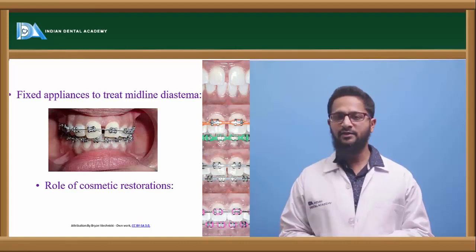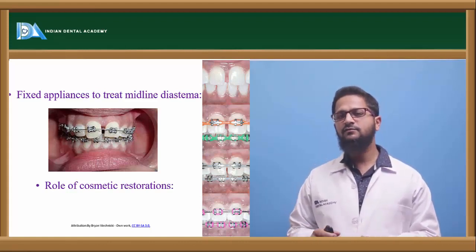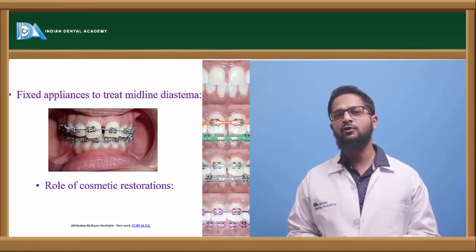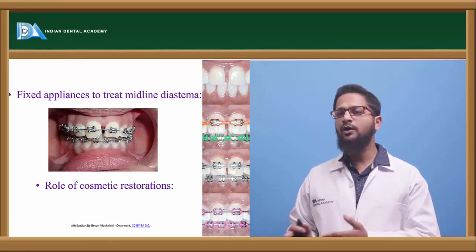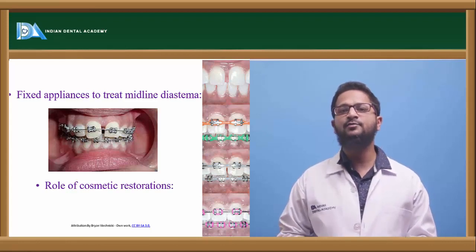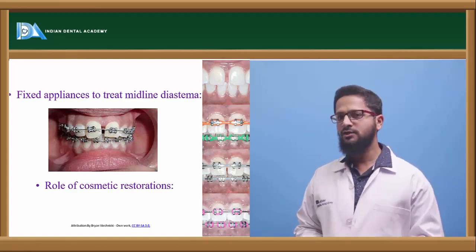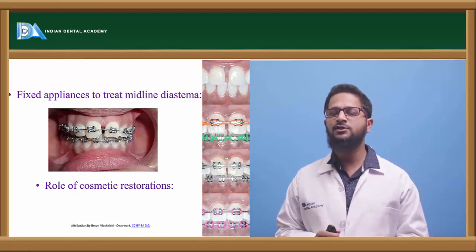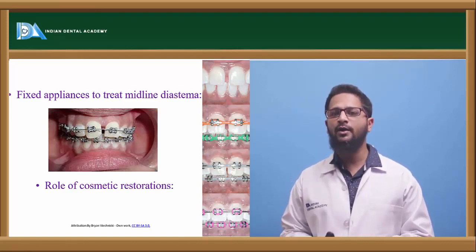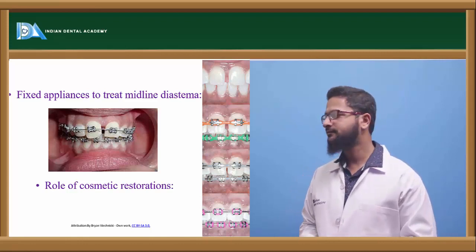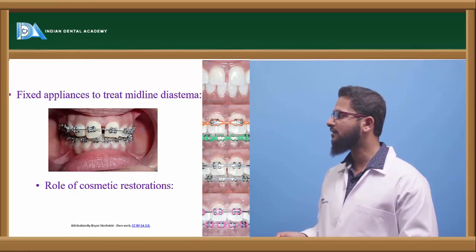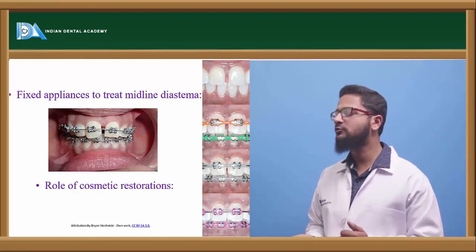Next is the role of cosmetic restorations. When midline diastema is occurring because of abnormal shape of the tooth or crown itself, it is better to modify the tooth by giving cosmetic restorations and prosthetic crowns. For final retention, after correction of midline diastema, it usually tends to recur or relapse very frequently. So it has to be given permanent retention by giving a lingual bonded retainer to prevent relapse. In these diagrams we can see how E-chains and E-threads and ligature wires are placed to bring the teeth close to each other and close this midline diastema.